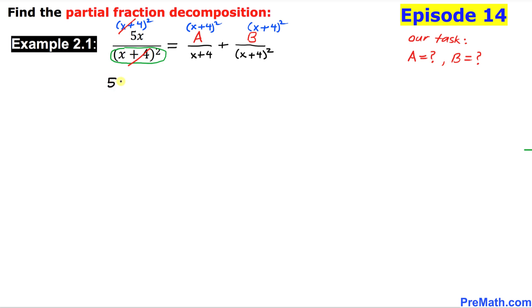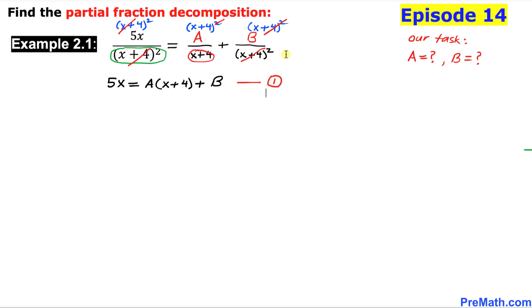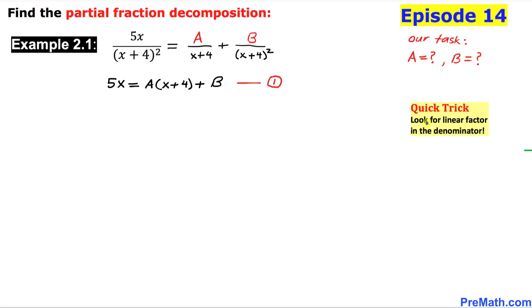On the left-hand side we end up with 5x. On the right-hand side, one x plus four cancels, leaving A times (x plus four), and the x plus four squared cancels with x plus four leaving plus B. We call this equation number 1.